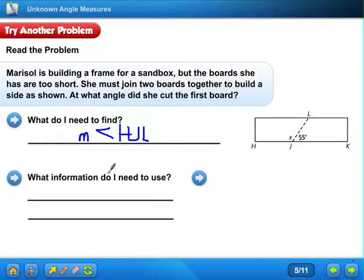What information do I need to use? Well, I know that this is 55 degrees right here. And this is a straight line, correct? So, I know that HJK is 180 degrees. And I know that LJK is 55 degrees.